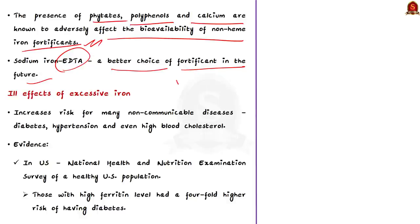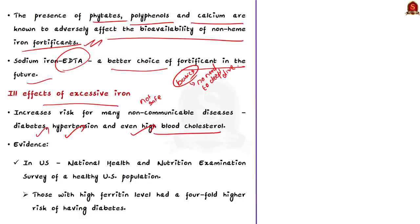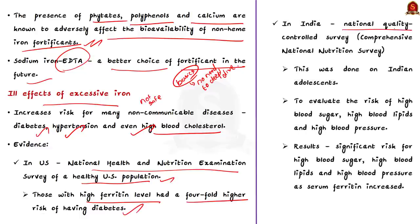We have discussed the basics of iron fortification — some of these aspects are technical, so no need to dwell too deeply. Now let us see the ill effects of excessive iron. Iron is an oxidant with a variety of ill effects, and its excess is not safe. Iron increases the risk of many non-communicable diseases like diabetes, hypertension, and high blood cholesterol. According to a National Health and Nutrition Examination Survey of the healthy US population, those with high ferritin levels have a fourfold higher risk of having diabetes. In India, a National Quality Controlled Survey of Indian Adolescents evaluated the risk of high blood sugar, high blood lipids, and high blood pressure as serum ferritin increased, showing a clear and significant risk of each of these conditions as serum ferritin increased.